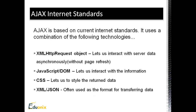AJAX consists of a bunch of internet standards and technologies. The first is the XMLHttpRequest object, which lets us interact with the server asynchronously. Then JavaScript and the DOM — the Document Object Model — which lets us interact with the data and information on the page. CSS is used to style the data. And we can use either XML or JSON for the format of transferring the data, or even plain text as well.